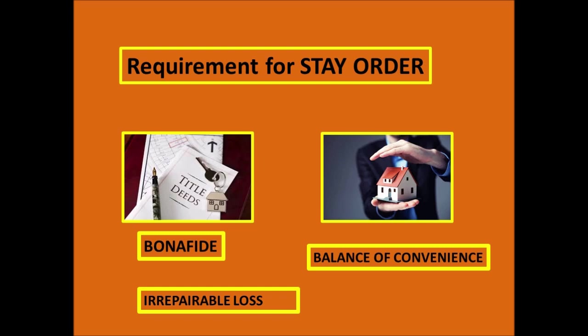The third thing is irreparable loss — it means that if this damage occurs, it cannot be undone or compensated. When you prove these three points in court, you will get a stay order.